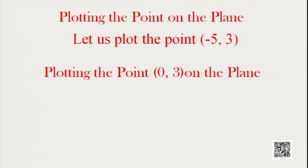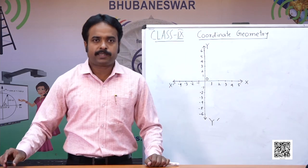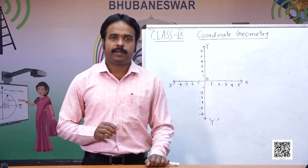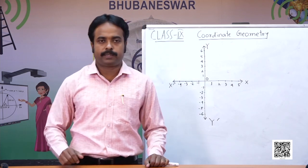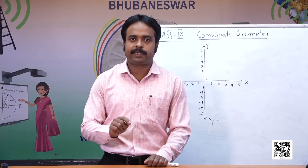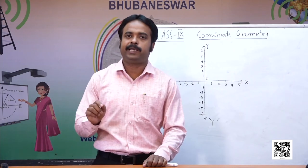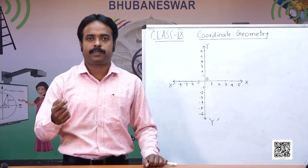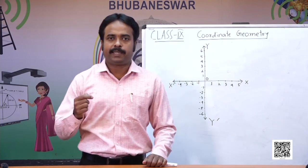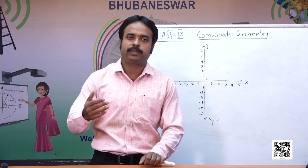Today we are going to discuss: if the coordinate is given, then how can we plot that point? In the last class, we discussed that if a point is given on the Cartesian plane, then how can we say the coordinate of that point. Now, reversely, we have to discuss that if the coordinates are given, how can we plot these points?